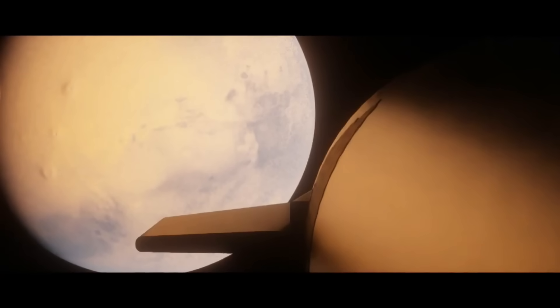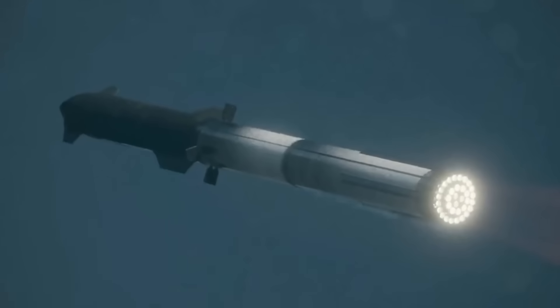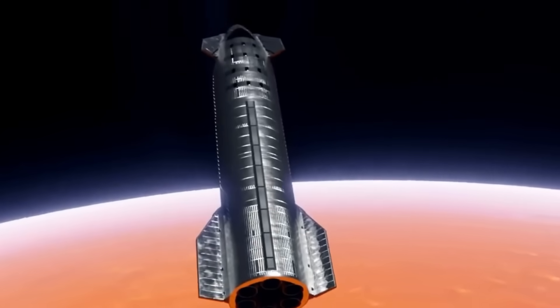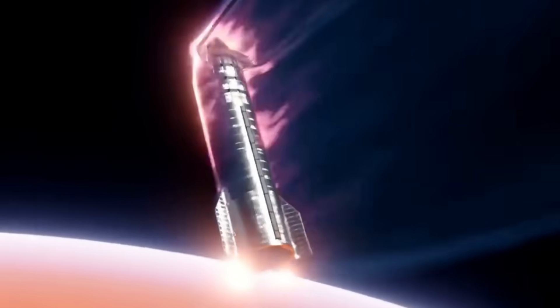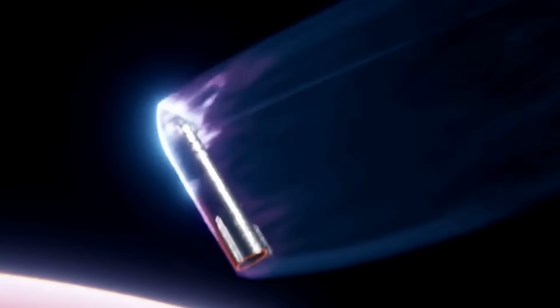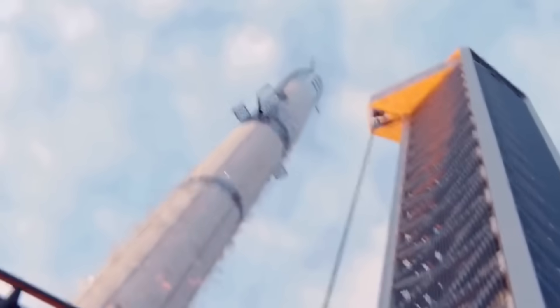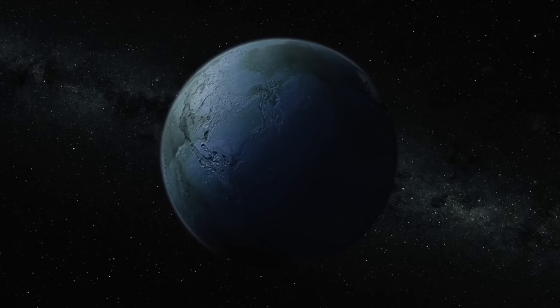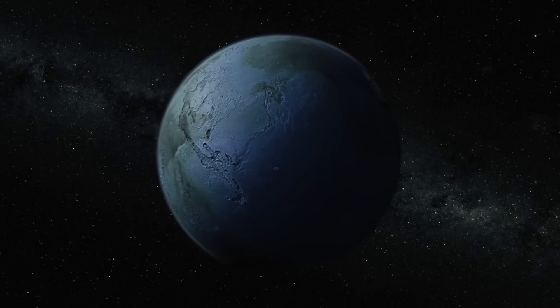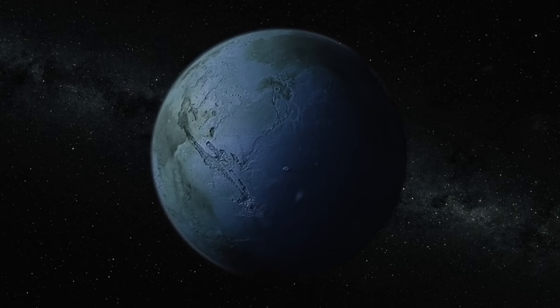The same principles that make this work on the Moon can be applied to Mars, where starship sections could form the cornerstone of the first Martian cities. The technical challenges have been immense. SpaceX has had to rethink everything, from how to maintain atmospheric pressure in repurposed sections, to how to connect multiple units into larger complexes. They've developed new welding techniques, new sealing systems, and new ways to integrate life support across multiple connected units.